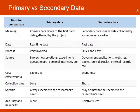Primary data refers to first-hand data gathered by the project. It is expensive, takes more time, is specific to the needs of the project, and is more accurate and reliable. Secondary data is data collected by others. It is less expensive, takes less time, may not be too specific to the interests of the project, and is less accurate and reliable. The project manager will need to decide and make a combination of both types depending on the indicator and constraints of the project.